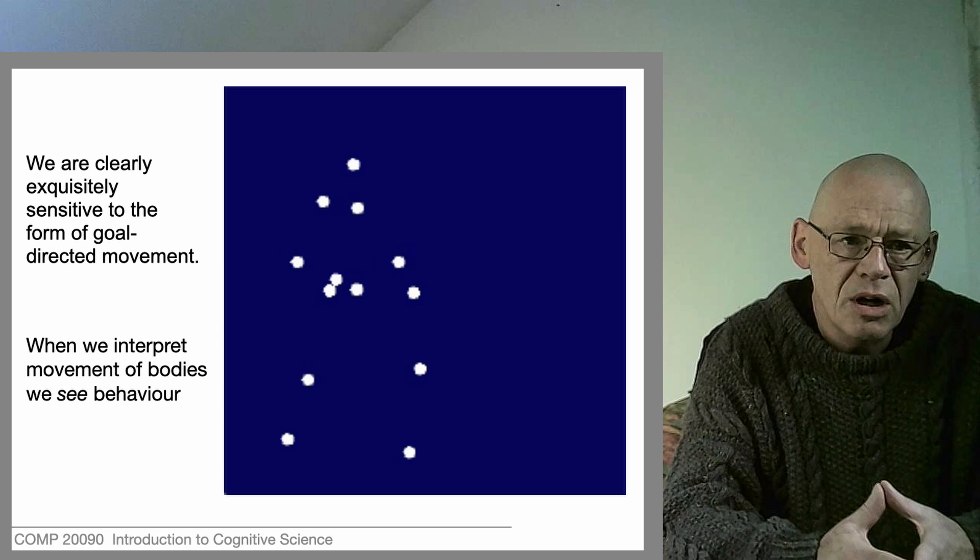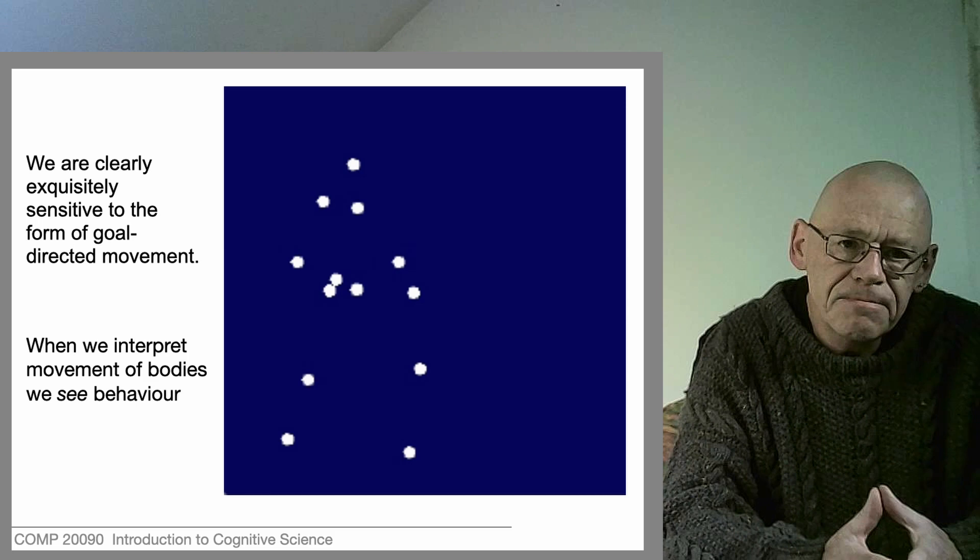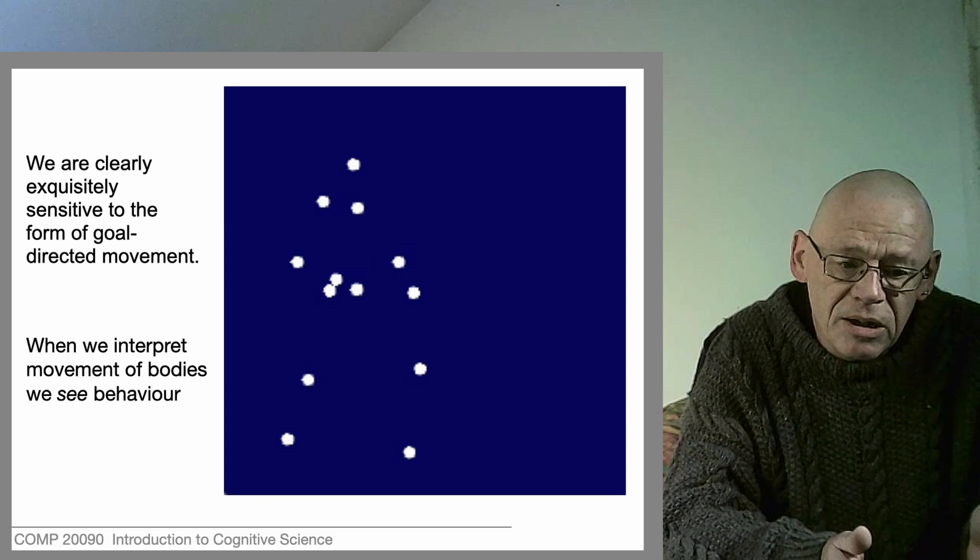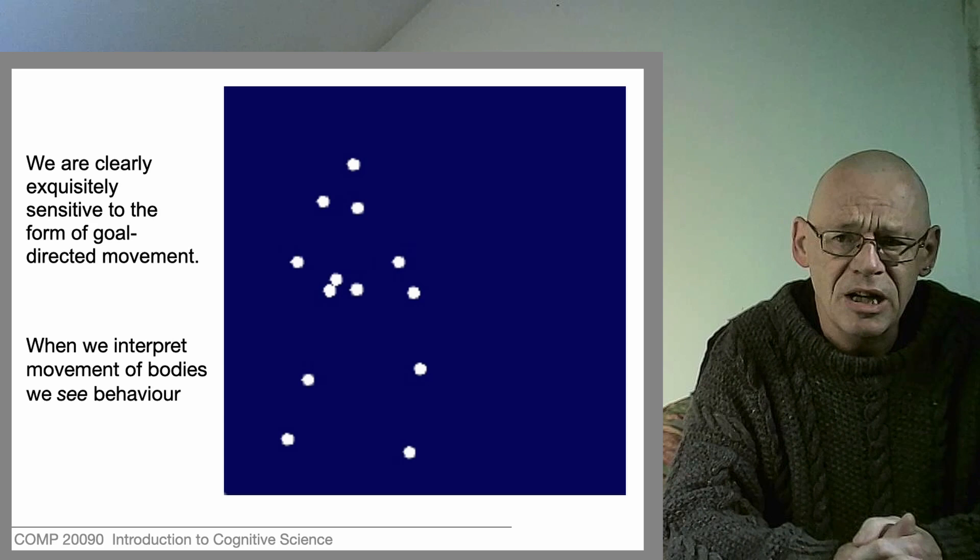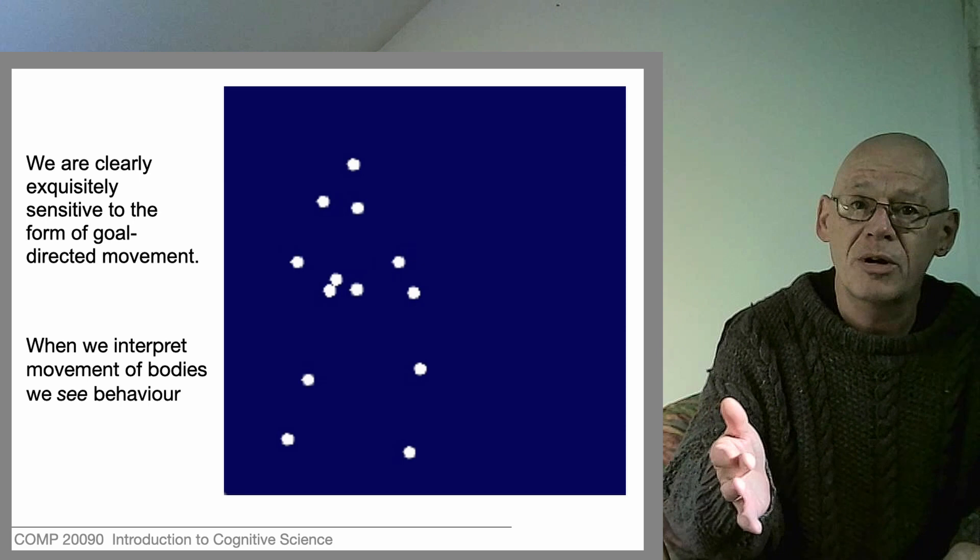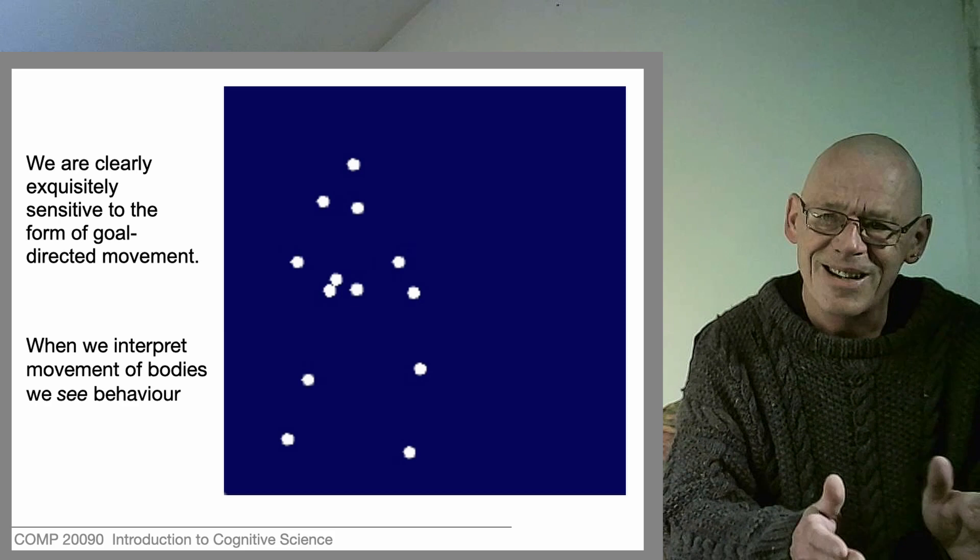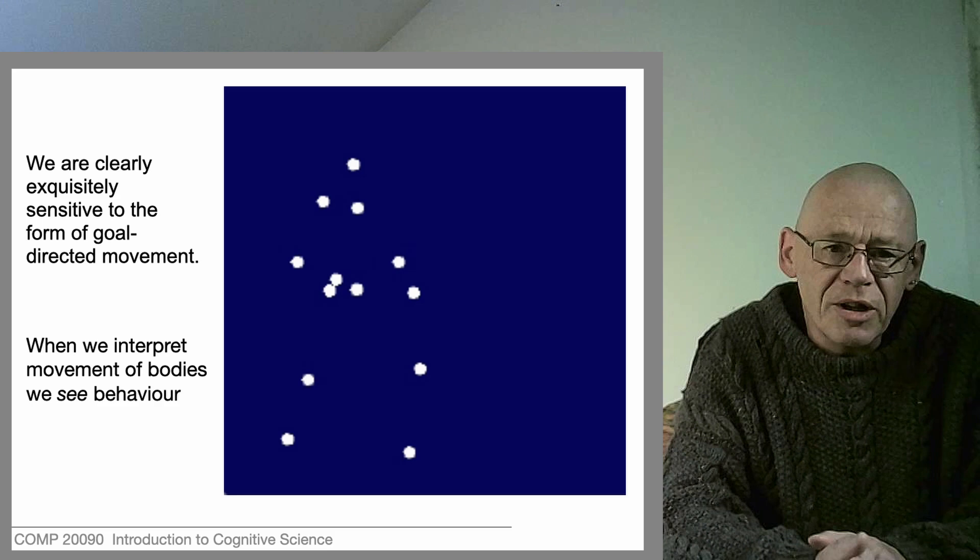Behavior is what happens when we interpret movements in terms of goals and purposes, which means it's not an objective category. The same set of movements could be interpreted by two people in two completely different ways. Looking at exactly the same movements of someone, one person may see them committing a crime, another person may see them exercising their right to freedom. The interpretation of movement is not the same thing as movement.